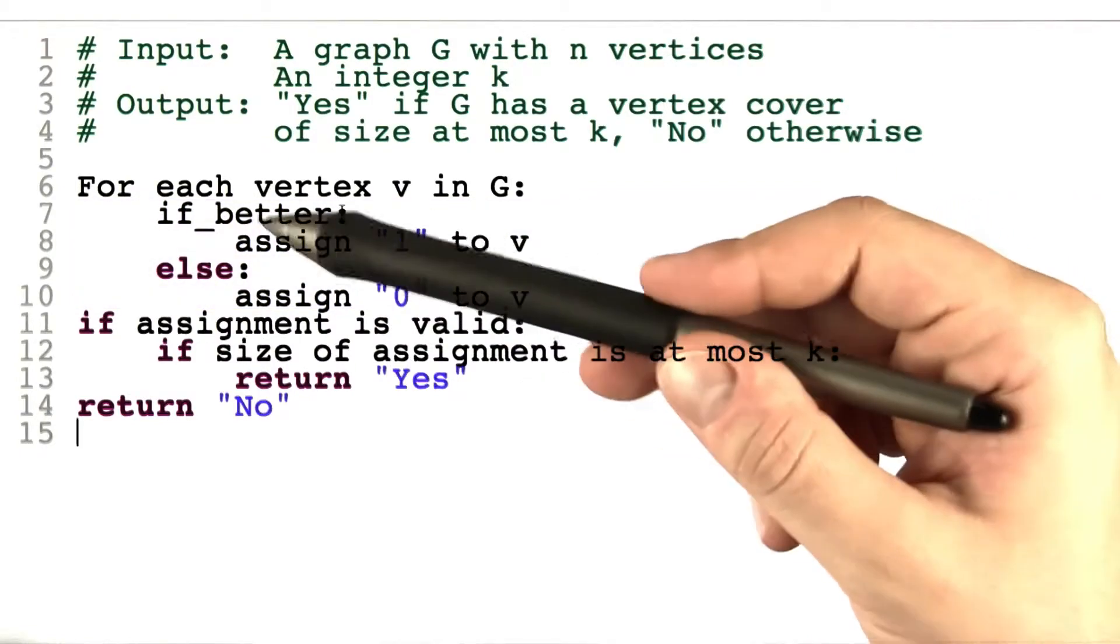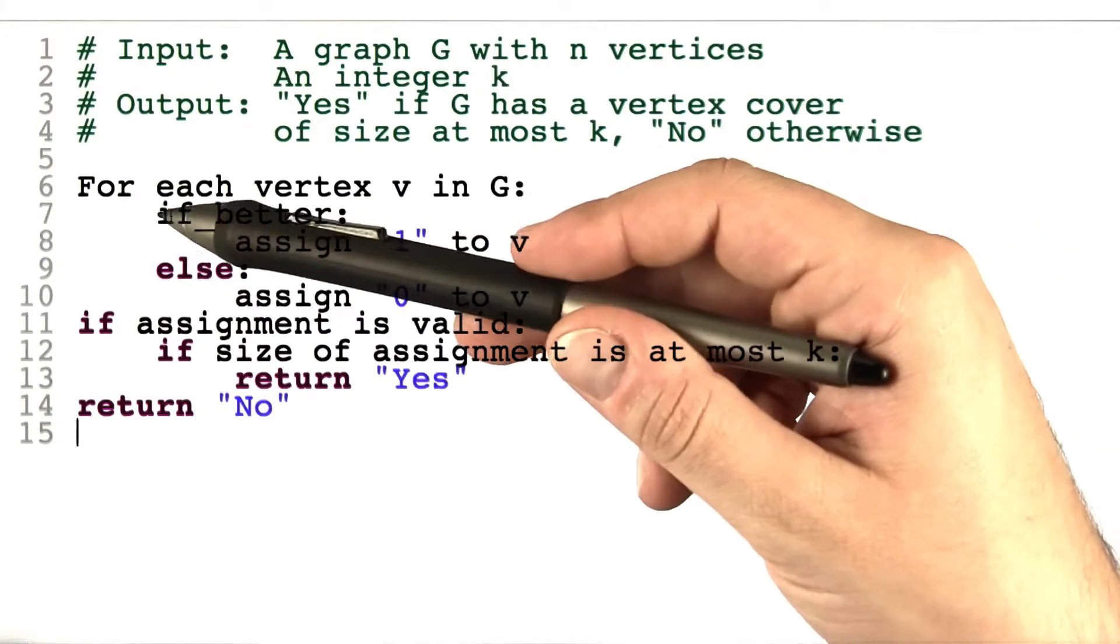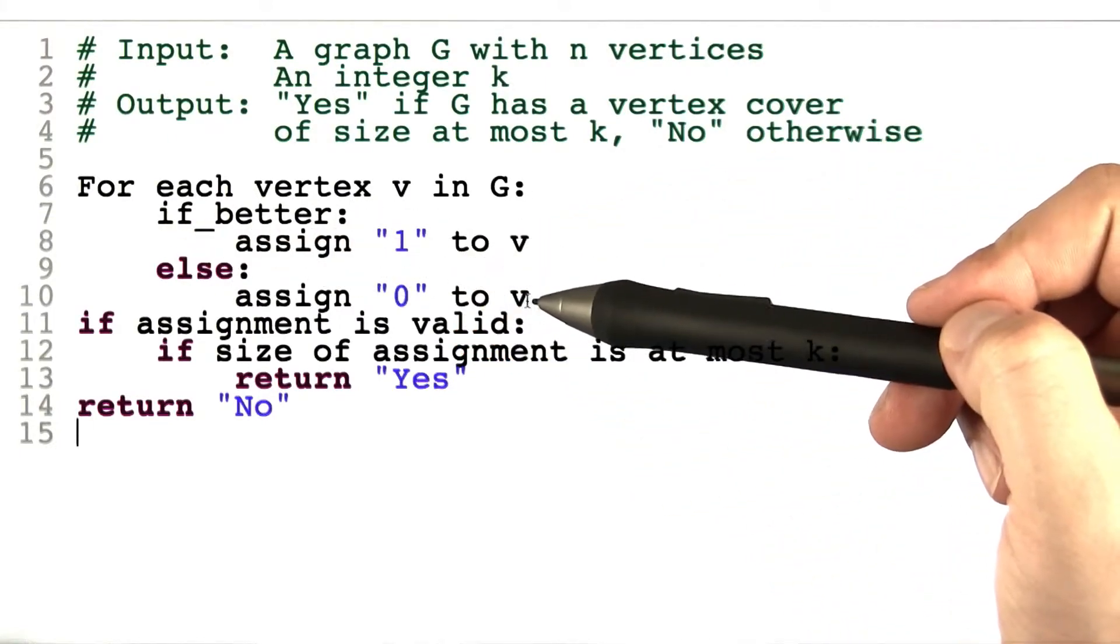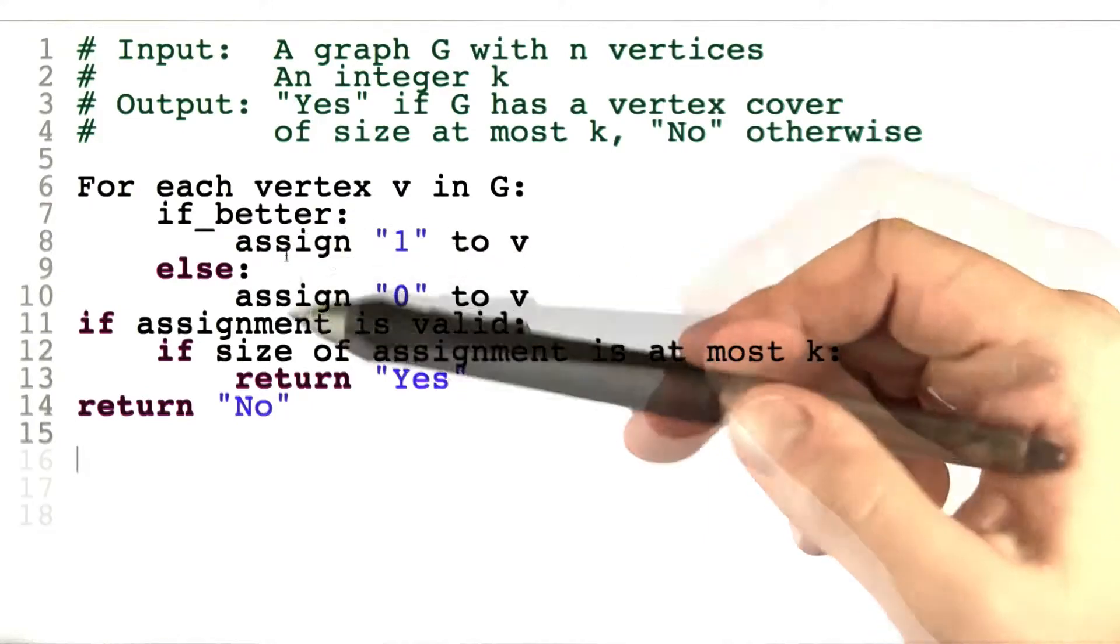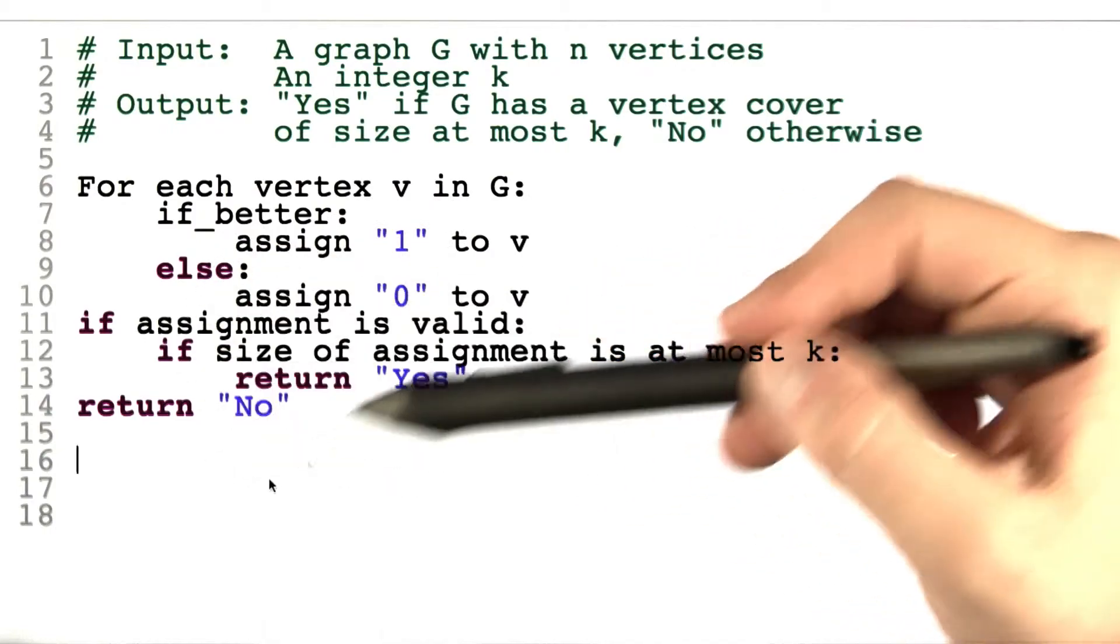That's why I said that the computer with this function available is extremely powerful. If you can trust the if_better to do exactly what we want - which is guess the best possible assignment - then this significantly changes the running time of the algorithm.